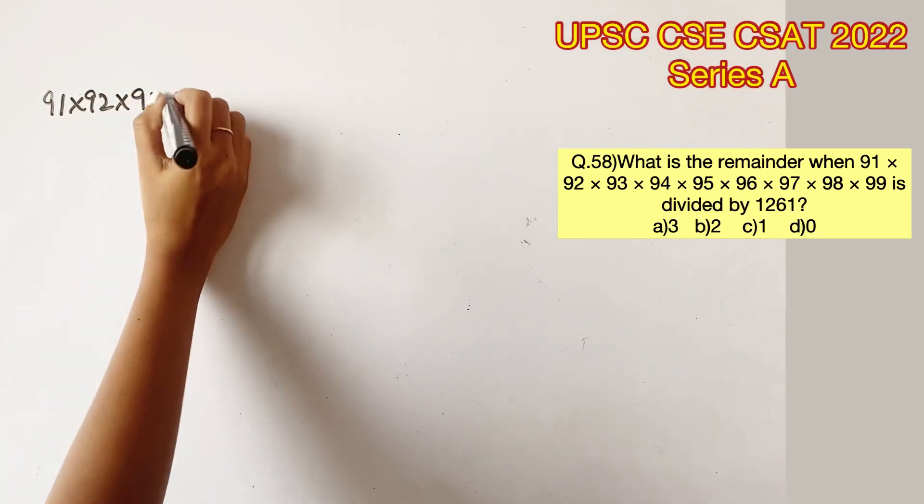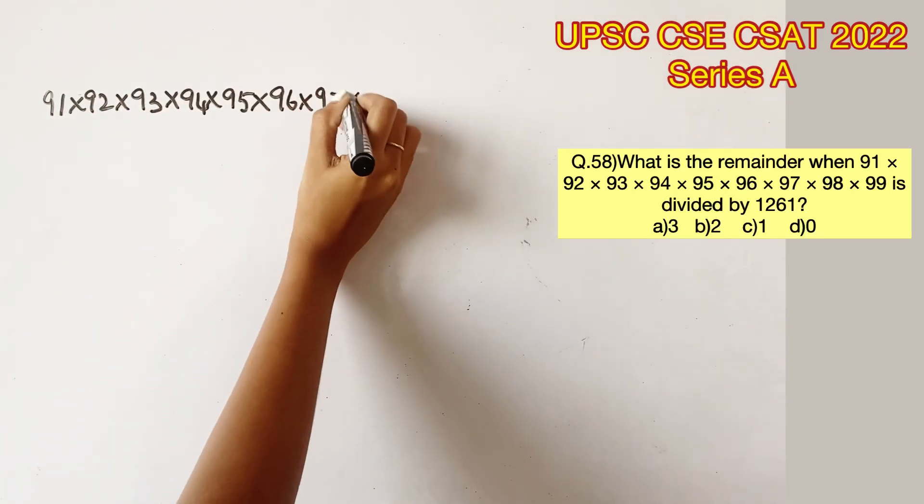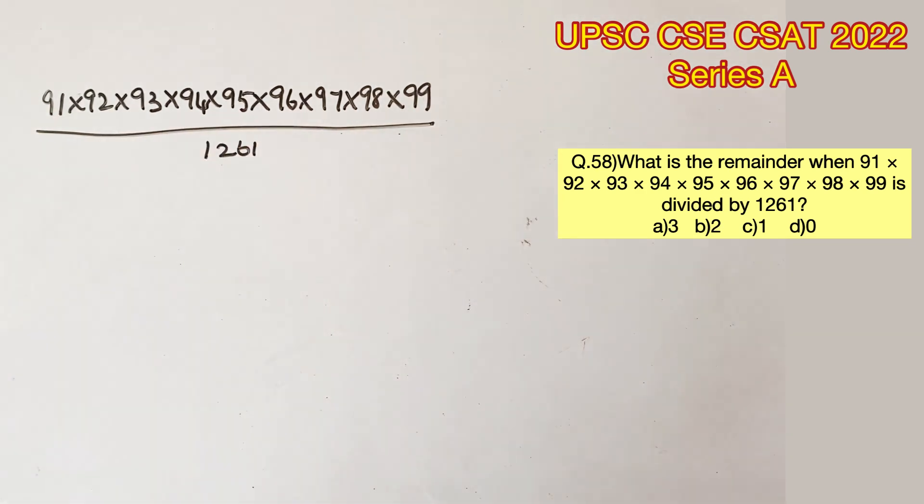What is the remainder when 91, 92, 93, 94 till 99 is divided by 1261?